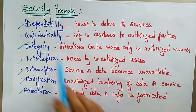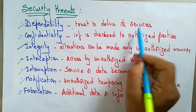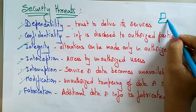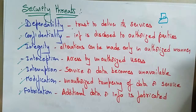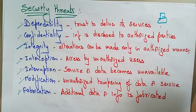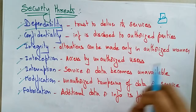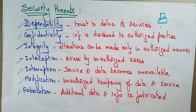Dependability as a security threat means the system's trust to deliver its service. For example, if I am sending a message to someone — just making a phone call saying hi or hello — I trust and depend on the network to deliver it without any attacker intercepting the message. I completely depend on and believe in the network I am using. That is the dependability security threat.